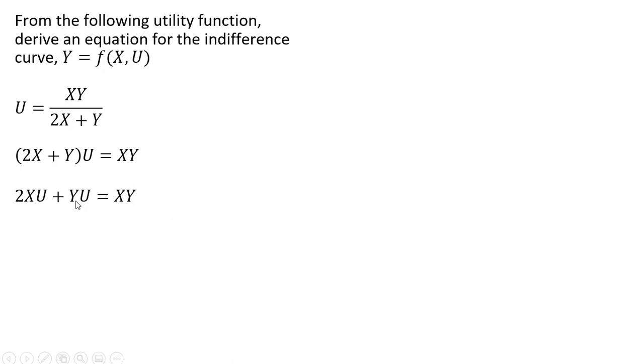And then we'll move this Y times U over to the other side here. And so you're going to get XY minus YU equals 2XU. And then on the left-hand side I'll factor out a Y term. And then divide everything through by X minus U. And we have the equation for an indifference curve. So Y is a function of X and level of utility.